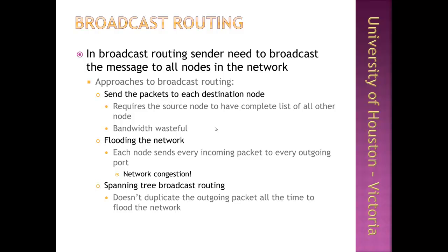Each router can keep track of sent packets in sequence and delete packets if they arrive again. The most efficient way to broadcast messages is by using the spanning tree broadcasting protocol. A spanning tree consists of links in the network that includes all nodes but has no loops. If each node knows the incoming and outgoing ports belonging to the spanning tree, broadcast can be achieved efficiently by each router forwarding packets only on the outgoing spanning tree links. However, computing and communicating the spanning tree to all nodes is non-trivial, especially when network conditions change.